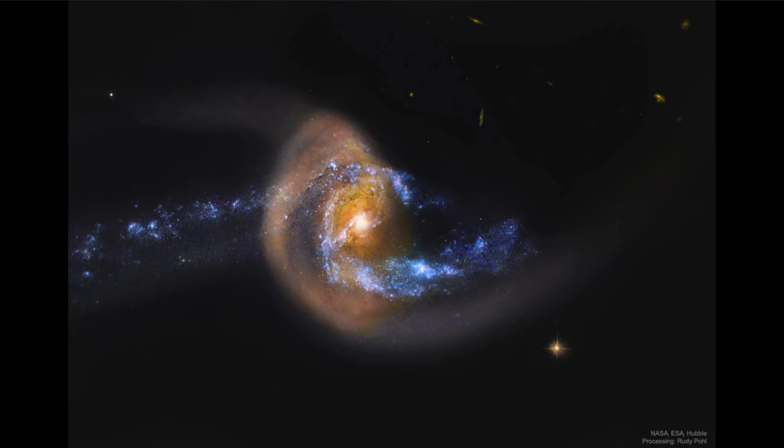When galaxies do interact, they become distorted. That's their gravitational fields interacting and distorting the material within them, pulling streams of material out into different directions. We can see some of that here, where a galaxy likely passed right through the center of this galaxy.